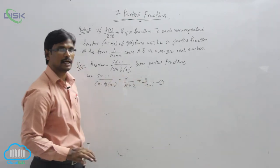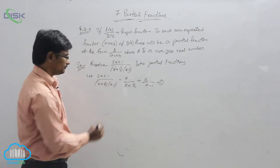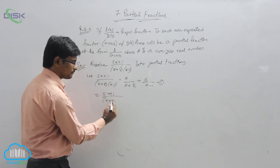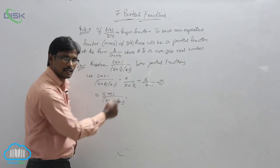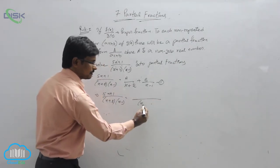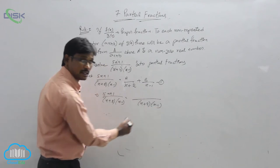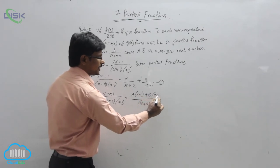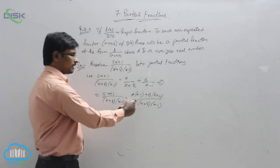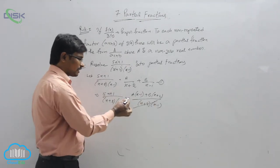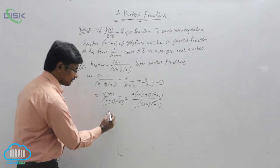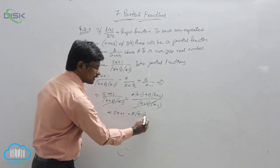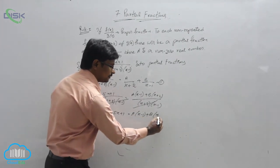Now we need to find out the values of A and B. Take the LCM of the RHS, which gives (x + 2)(x - 1). The numerator becomes A(x - 1) + B(x + 2). Observing both LHS and RHS, the denominator terms cancel since they are the same, leaving: 5x + 1 = A(x - 1) + B(x + 2).